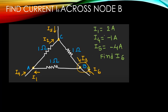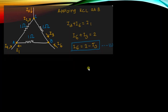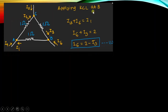To find the value of current I6 using KCL, we apply KCL at node B. At node B, we have three currents: I3, I6, and I1. According to KCL, incoming current equals outgoing current, so I3 plus I6 equals I1. Substituting the known value of I1, the equation becomes I6 plus I3 equals 2, or I6 equals 2 minus I3.